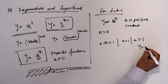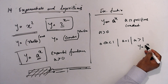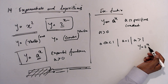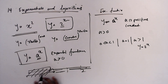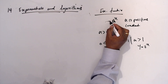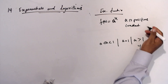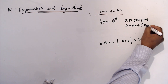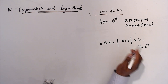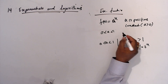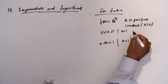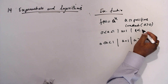For a > 1, we take y = 2^x. The a value is 2, which is greater than 1. We'll draw f(x) = 2^x where a > 0. We'll look at three intervals on the number line: 0 < a < 1, a = 1, and a > 1.